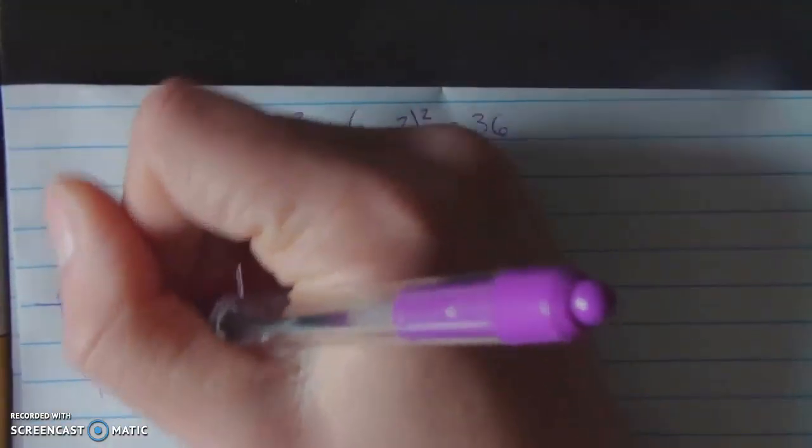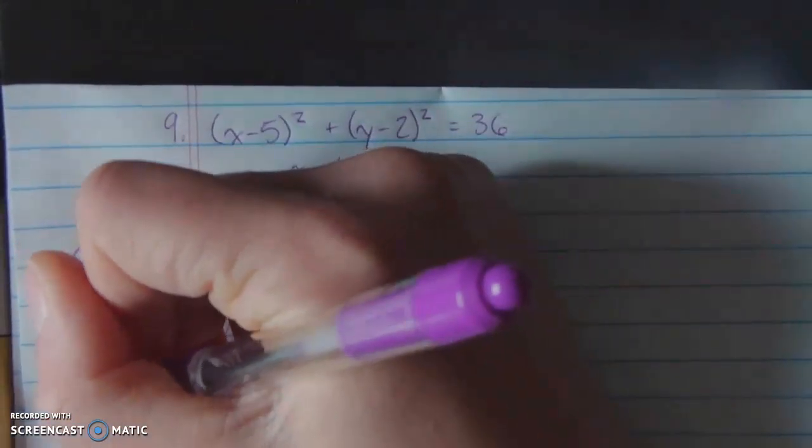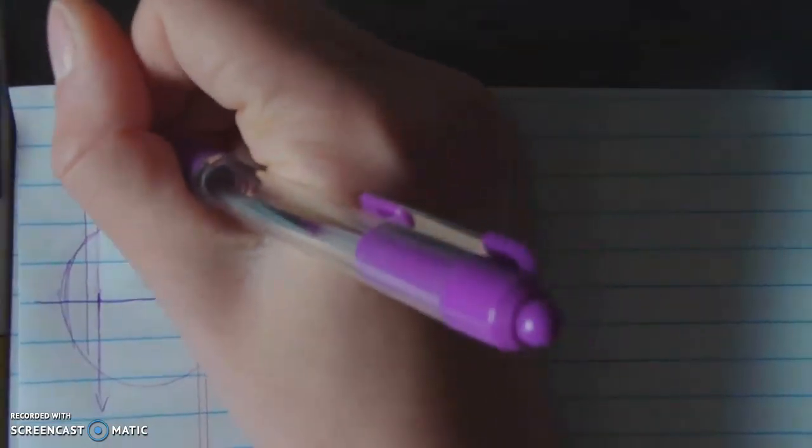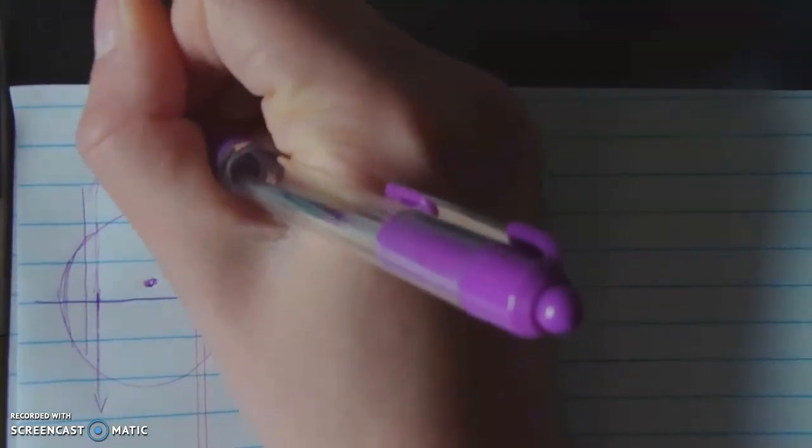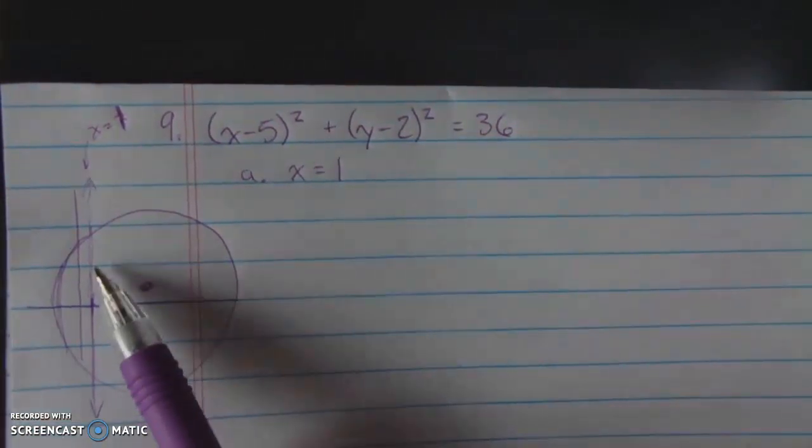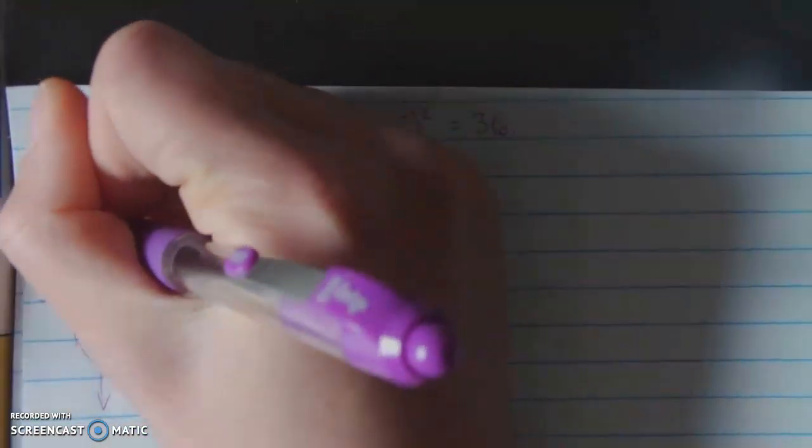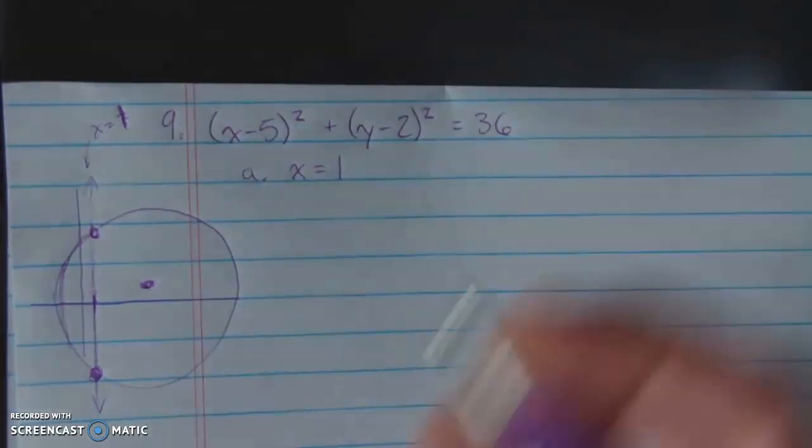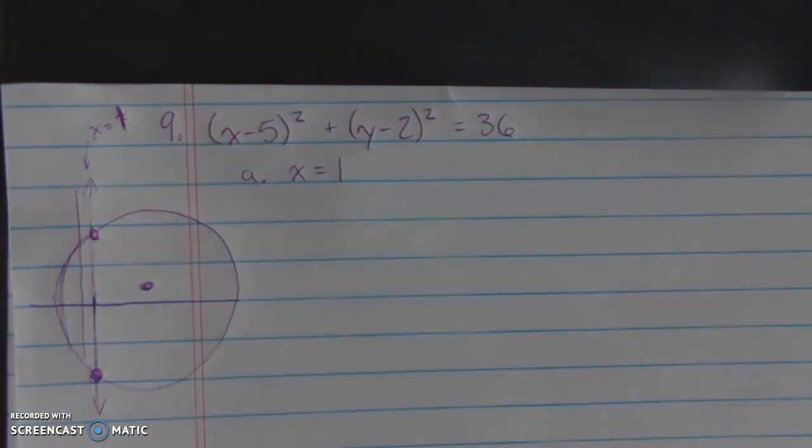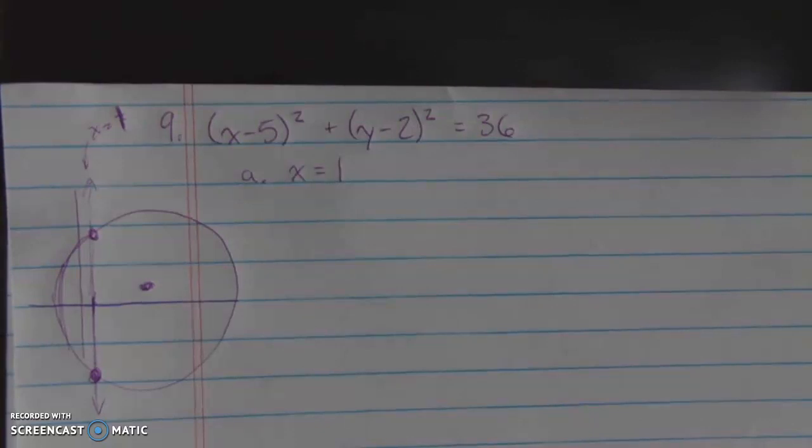And if I were just to drop in x equals 1, that is a vertical line that goes through the x coordinate of 1. Now could I make a great graph, look at what those points are, and find them on my graph? Sure. But that's actually going to take a lot of work, and it can be very hard to be accurate using graphs that you draw.